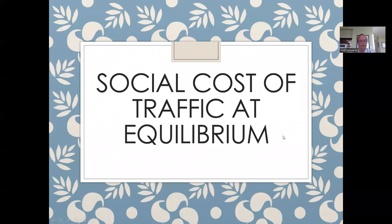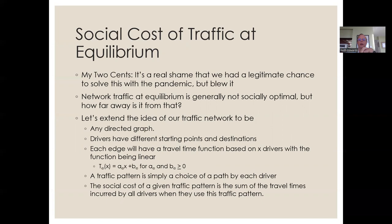What are the social costs? At the start of the pandemic, we had a legitimate chance to minimize the amount of traffic and resources we're consuming, but we definitely blew that. Network traffic at equilibrium is generally not socially optimal, but how far away is it from the optimum?